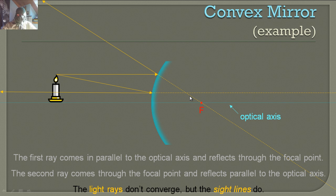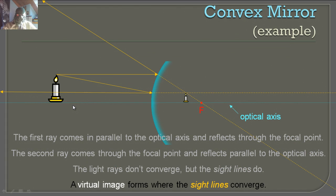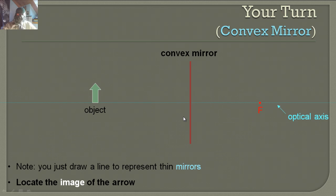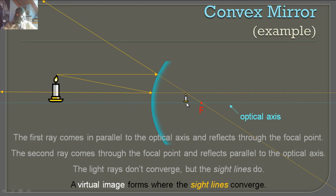Is the image going to be virtual or real? If you said real, you are wrong — it's virtual. It's on the other side of the mirror from the object. A virtual image forms where the sight lines converge — in this case it's a little smaller but also upright. These are a lot of the funhouse mirrors you'll see — they make you look smaller and weird.